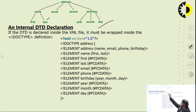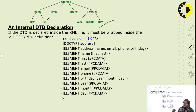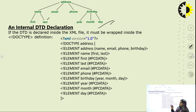Email and phone are not further divided. In the birthday node, we have three further divisions. This is the tree-like structure. Now let's look at the DTD code for that particular structure — this is the internal DTD declaration.